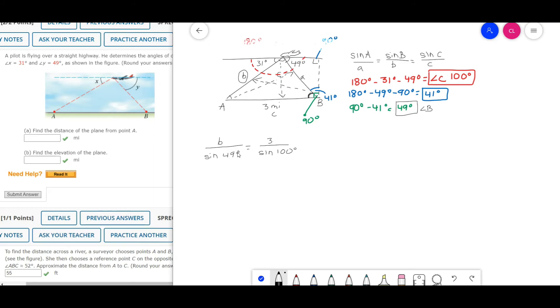You multiply both sides by sine of 49 so you can solve for B. That cancels out here when you cross multiply. This ends up being 3 times sine of 49 degrees over sine of 100 degrees.